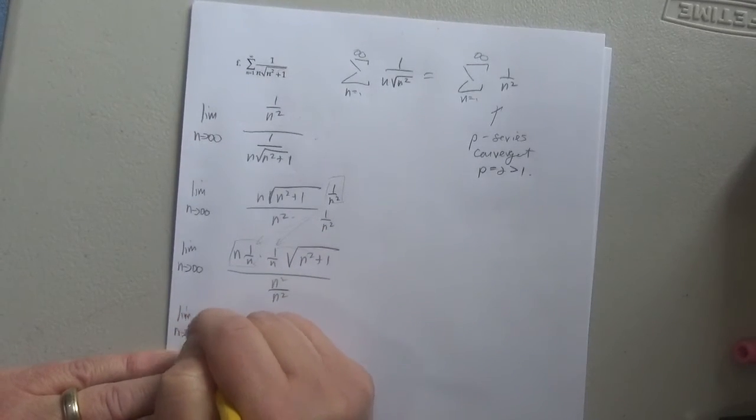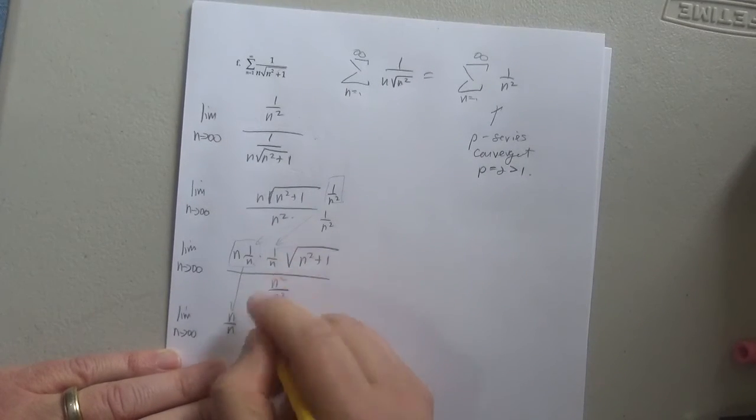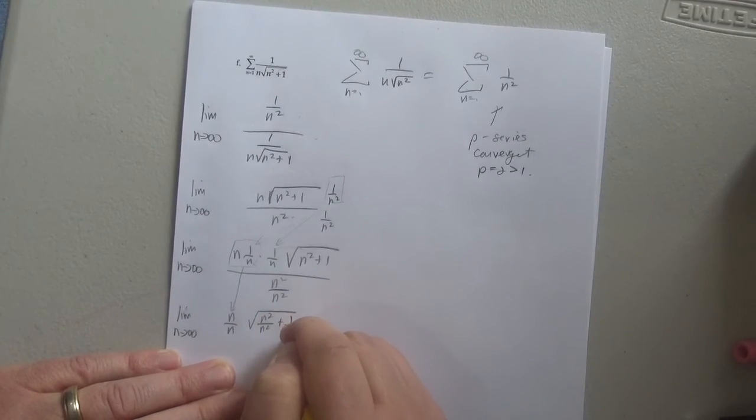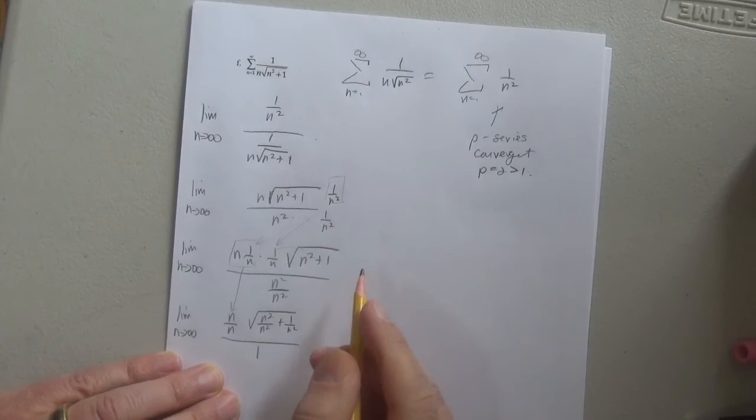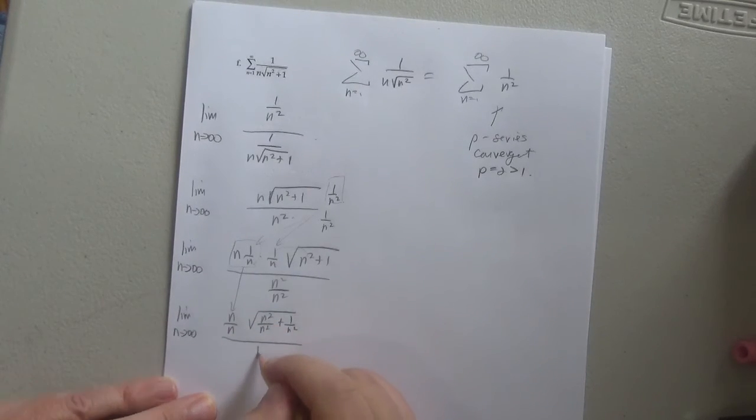So I'm just going to rewrite it. So I get n over n. That's this guy here. I slide this one back in. I get n squared over n squared plus 1 over n squared all over. I'm just going to write that as 1. So this is 1. This is 1. This is 0. That's 1.